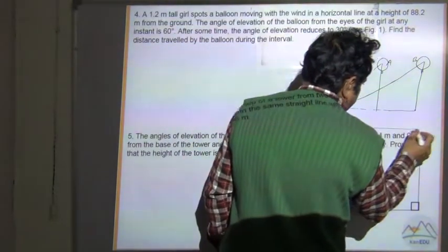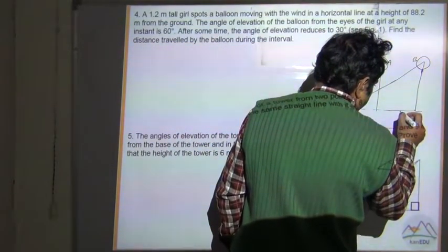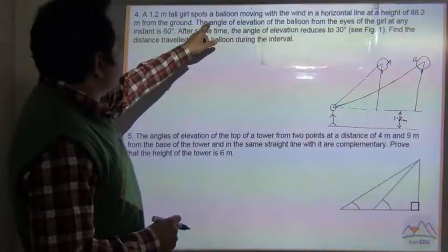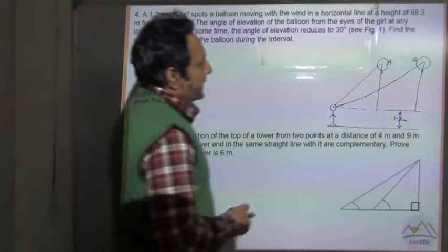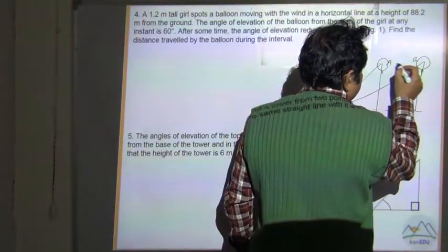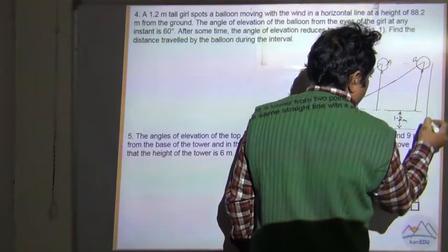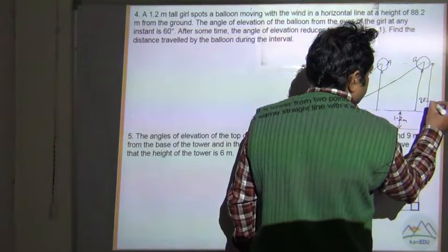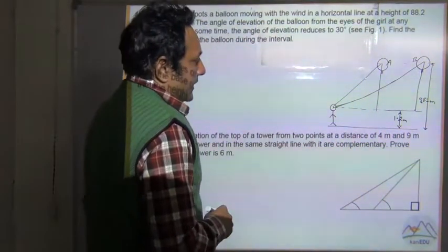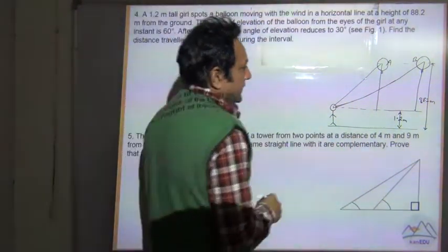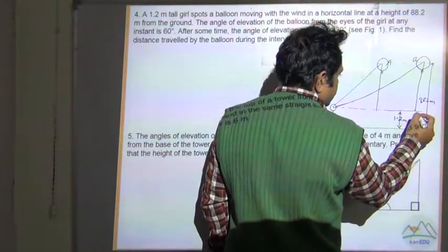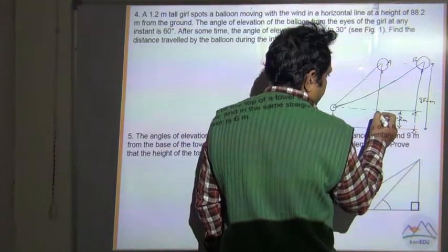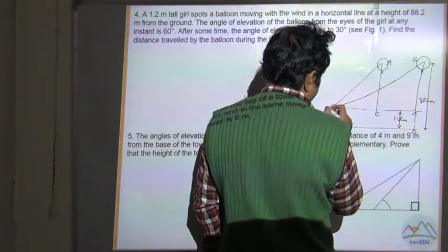The height of the girl is 1.2 meters and the balloon is at a height of 88.2 meters from the ground. Let's mark the points: A, B, C, D, E, and F.